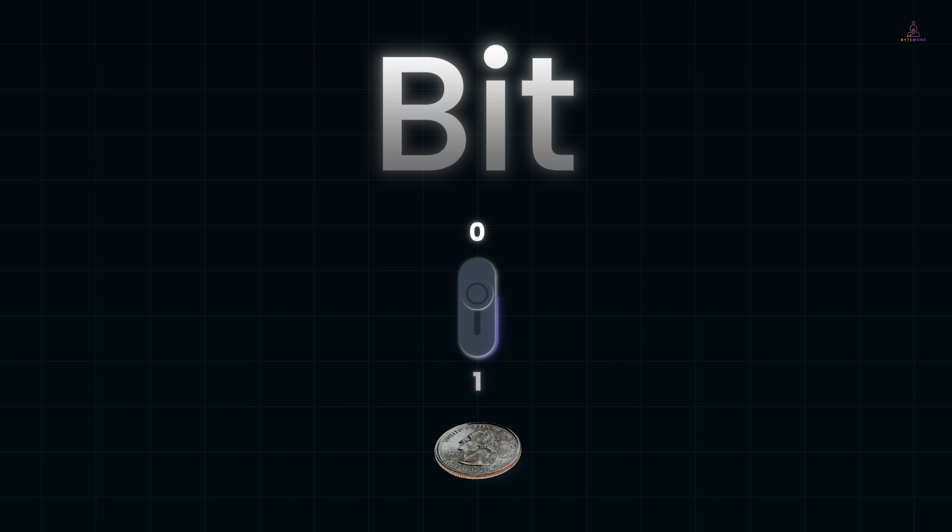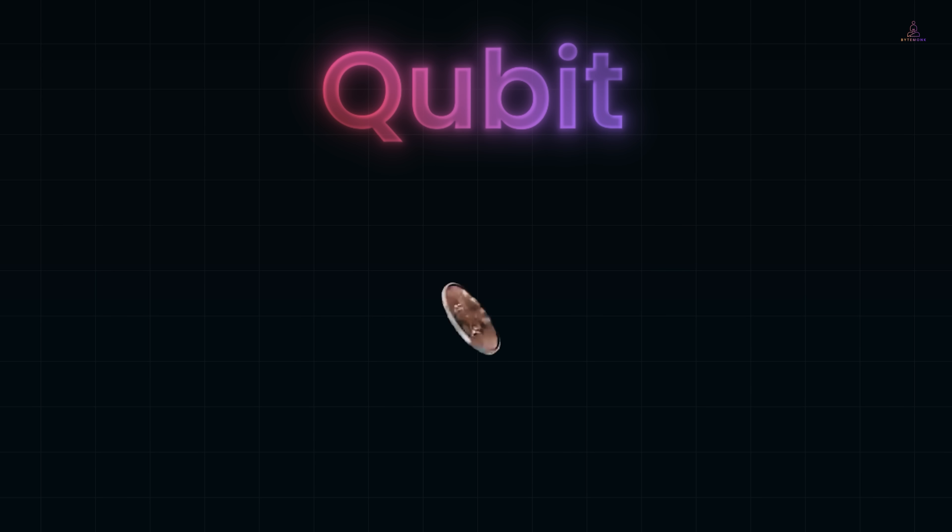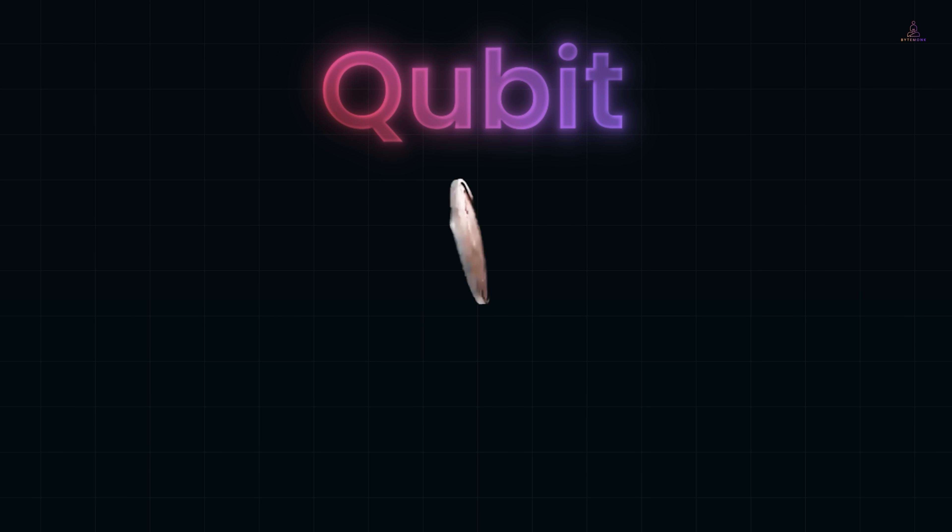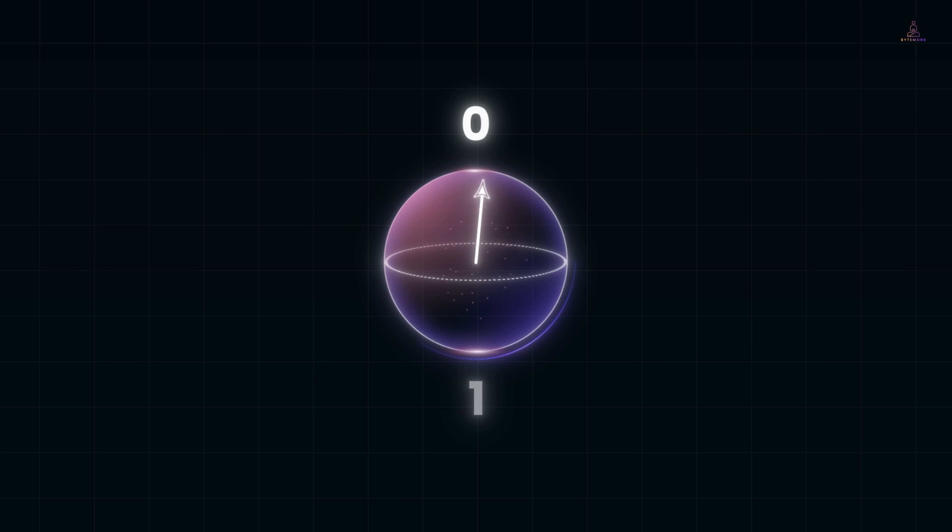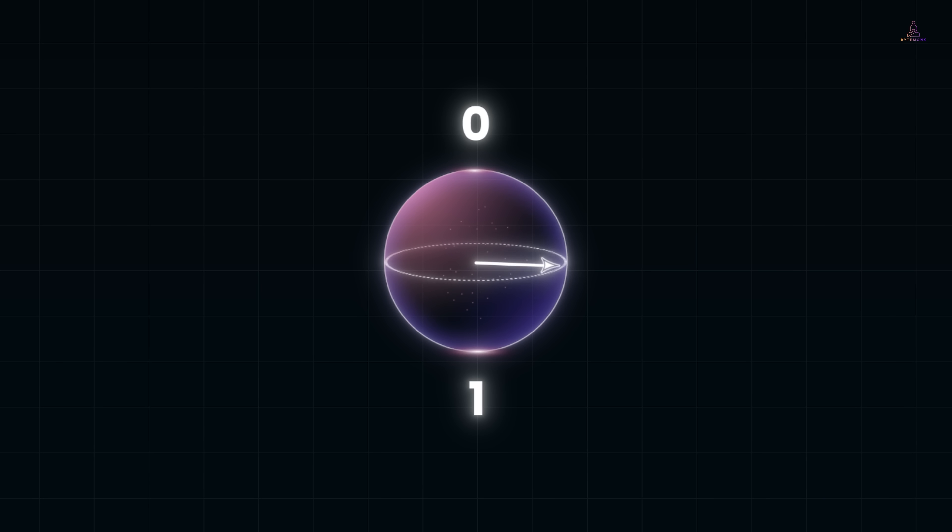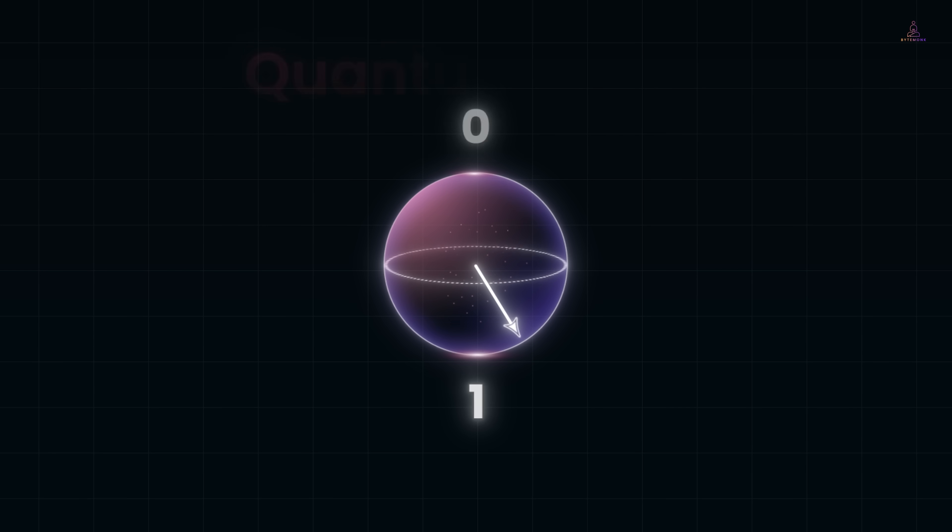A classical bit is like a coin lying flat on the table. It's either heads or tails. That's it, no in-between. A qubit is more like a coin spinning in the air. While it spins, it isn't locked into just heads or tails. It has some chance of landing heads, some chance of landing tails. That blend of chances is what we call superposition.